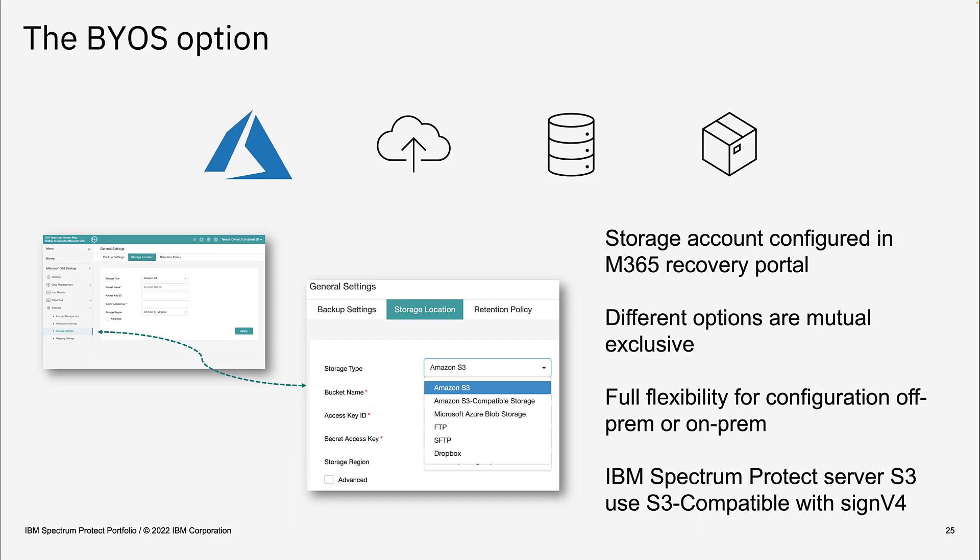The SPP Online Service supports multiple storage options, including Amazon S3 or any S3-compatible storage, Microsoft Azure Blob Storage, FTP, SFTP, or Dropbox, giving the customer flexibility to configure off-premises or on-premises storage. Additionally, the Spectrum Protect Server S3 connection is supported — to configure this, use the S3 compatible option in SPP Online Service and set the signature version 4 attribute as an extra attribute in the configuration.